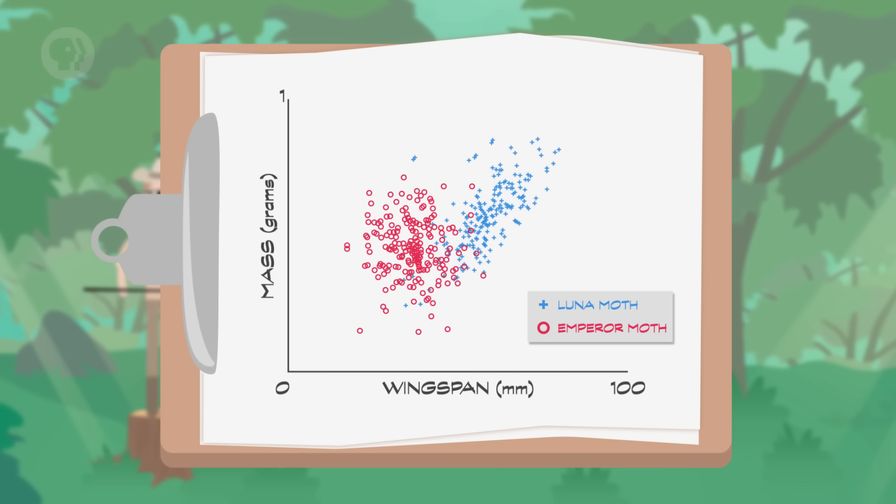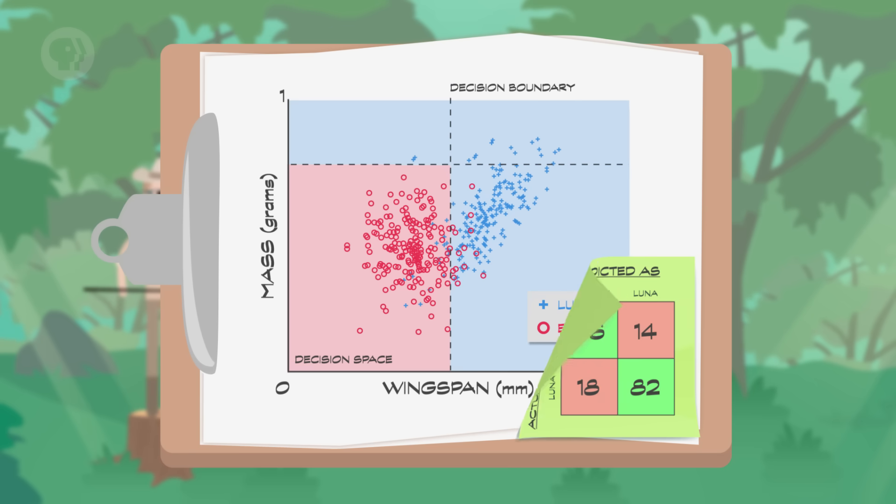I'm just going to eyeball it and say anything less than 45 millimeters in wingspan is likely to be an emperor moth. We can add another division that says, additionally, mass must be less than 0.75, in order for our guess to be emperor moth. These lines that chop up the decision space are called decision boundaries.